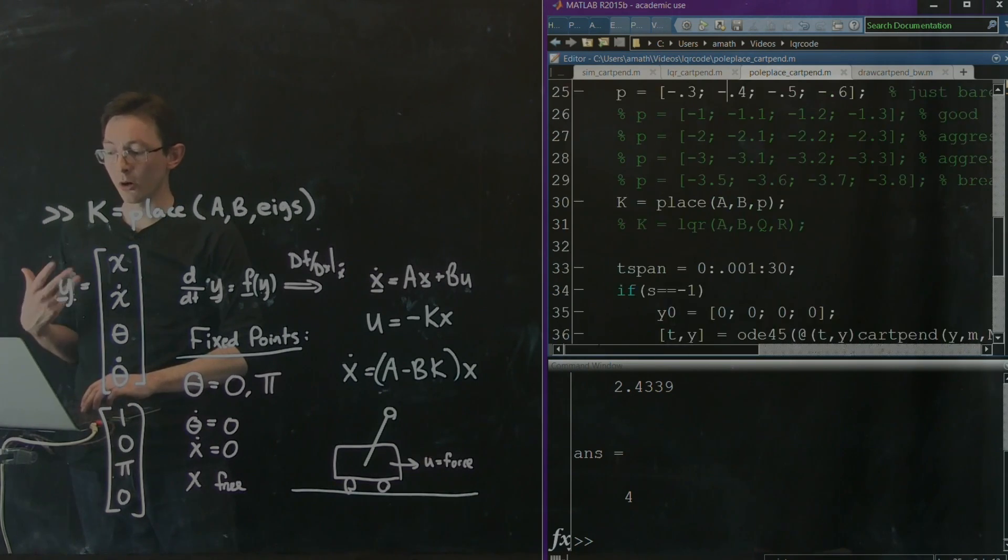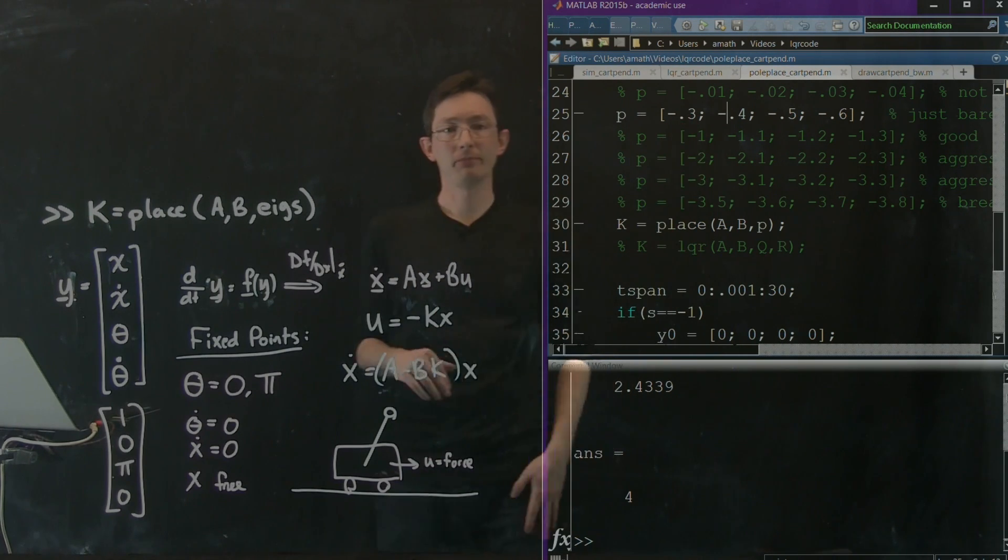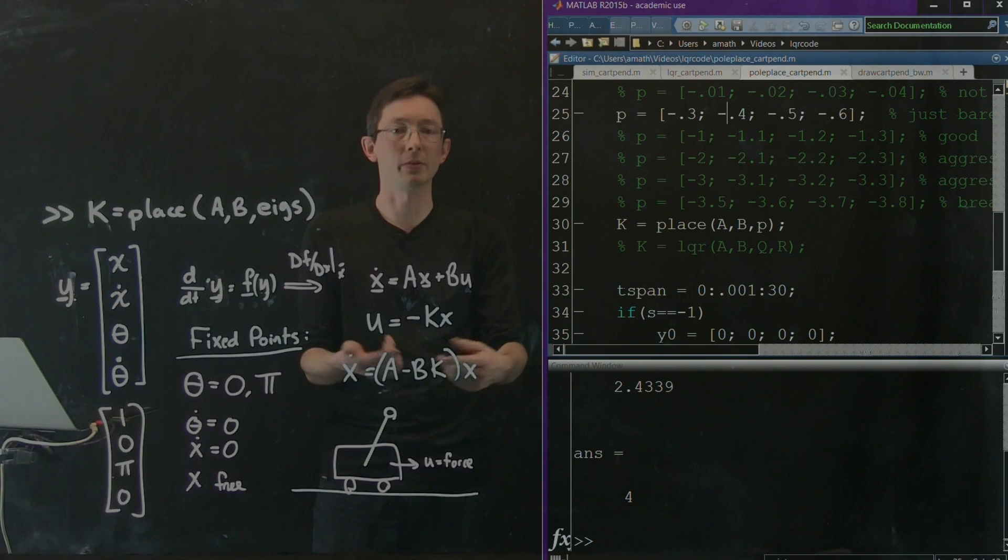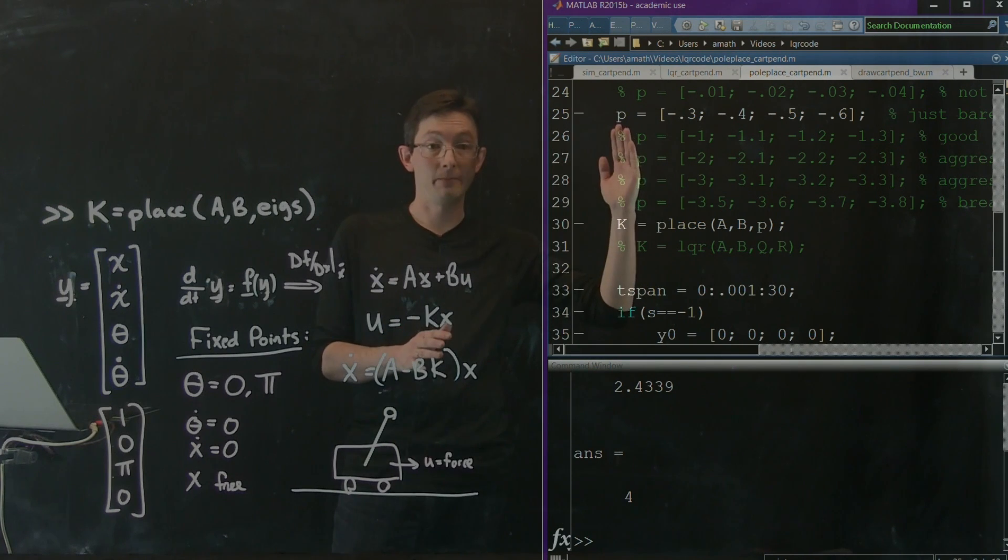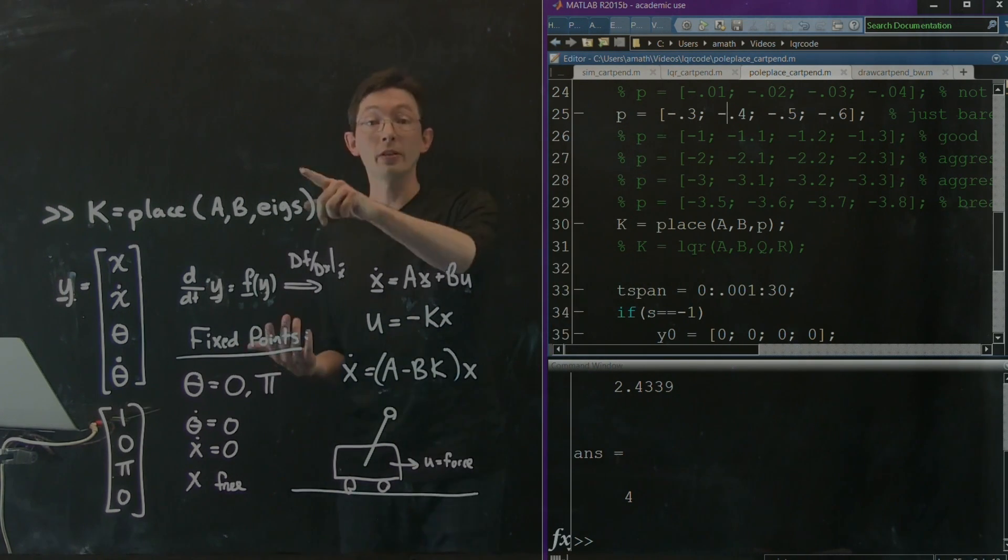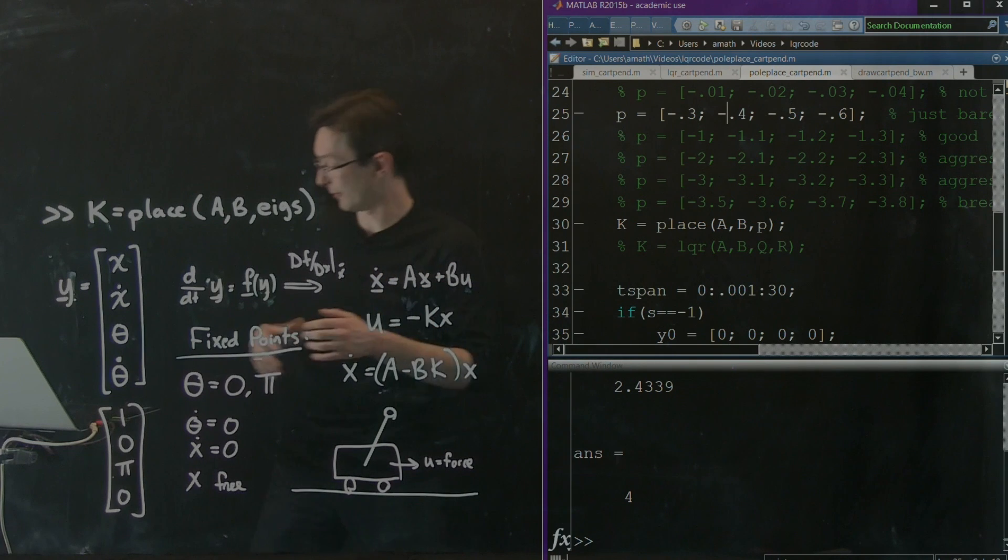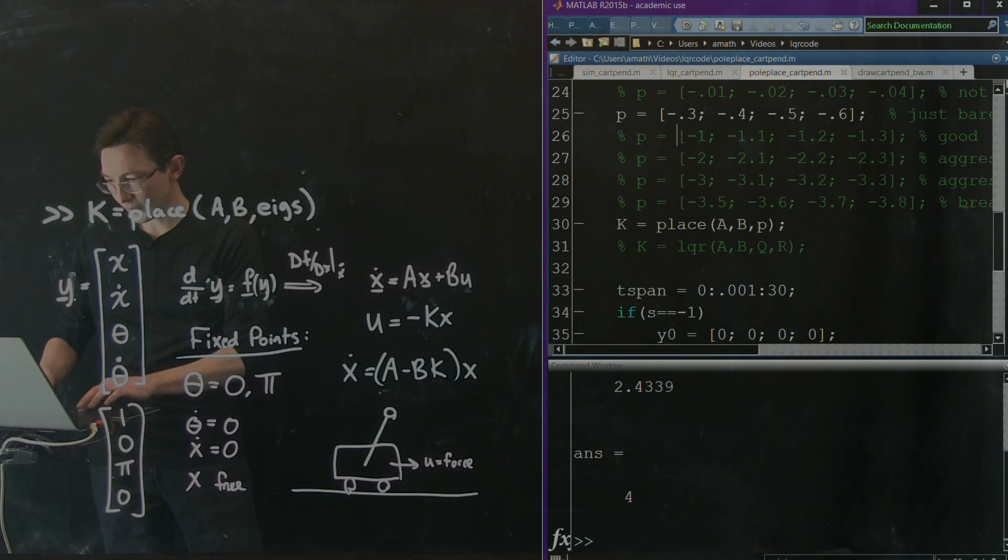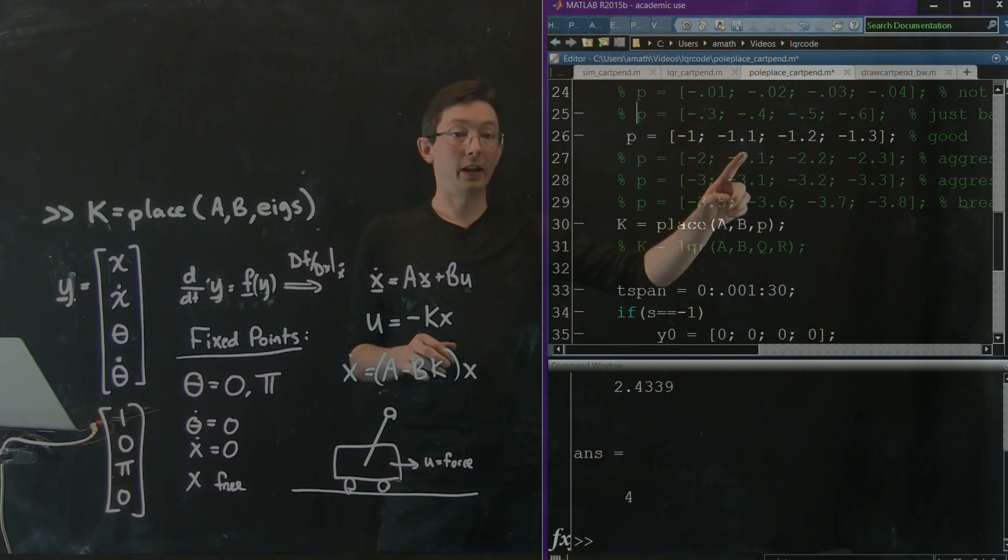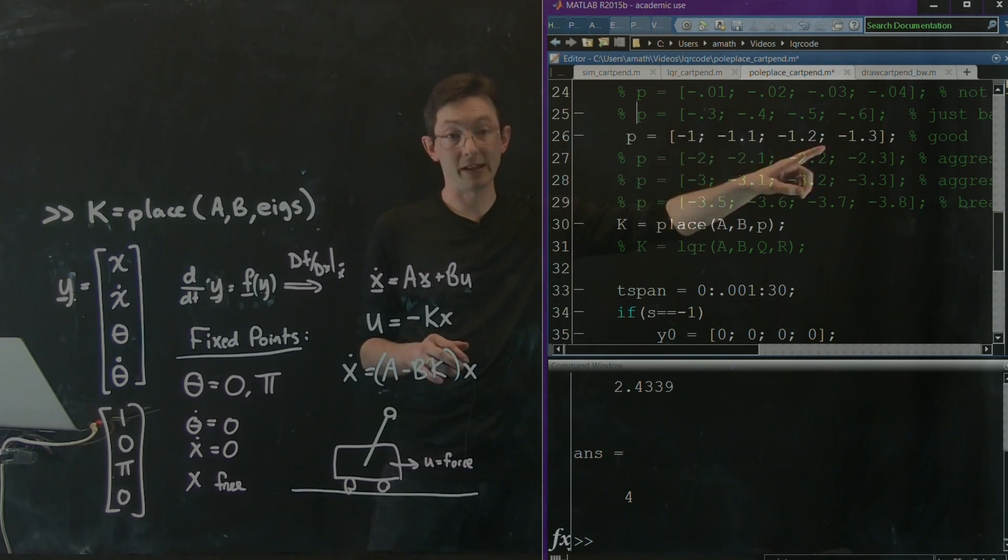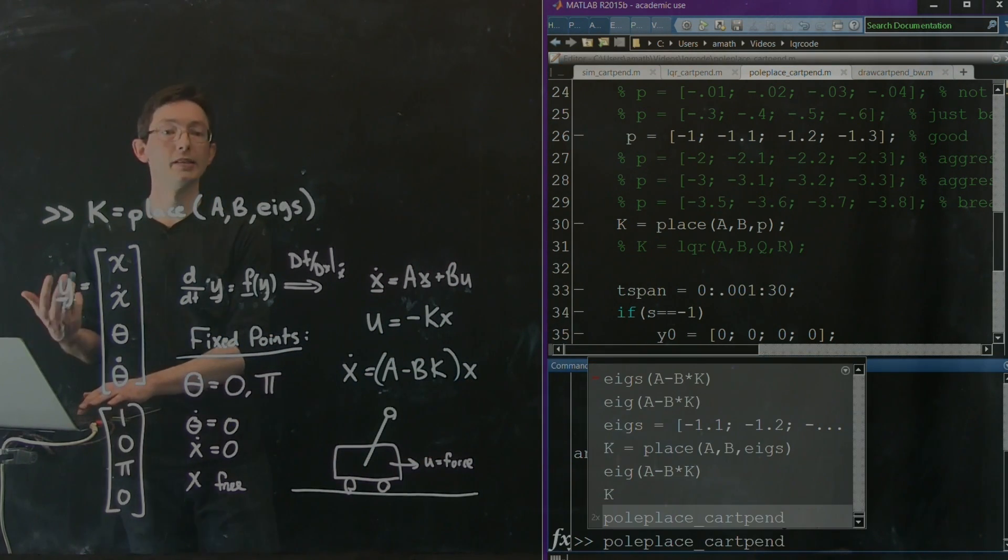So let's say I want to make this more aggressive. I want to make it faster to move over to the right. So what would I do to these poles, these eigenvalues? I call them poles. People call them poles or eigenvalues. They're the same thing. What would I do to these to make them faster? So this thing is more aggressive. Well, I could move them farther into the left half plane. I could make them have a more negative real part. That should make them faster and more aggressive. So let's try this one. Okay. So I'm just making them more negative, negative 1, negative 1.1, negative 1.2, negative 1.3. So this is more aggressive eigenvalue placement. I should have faster convergence. Let's try this out. Pole place cart pend.